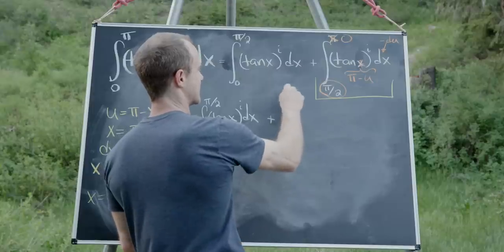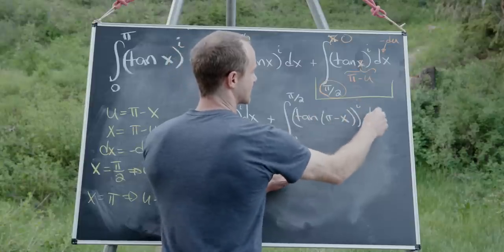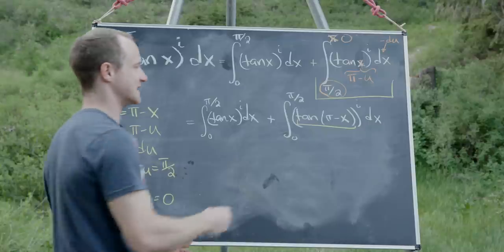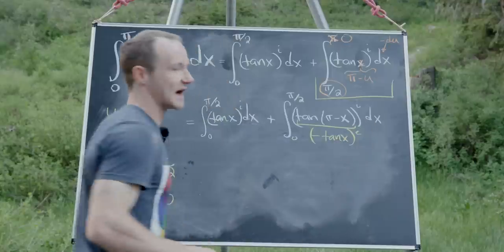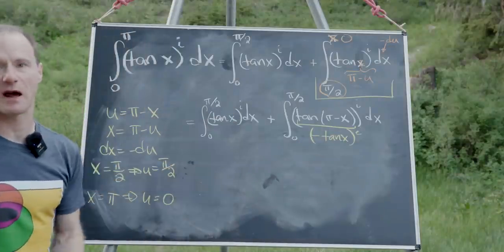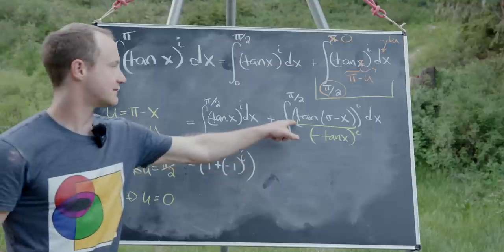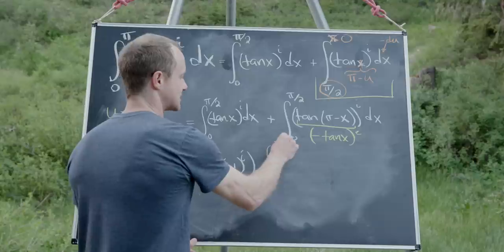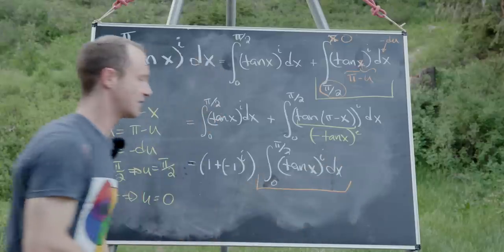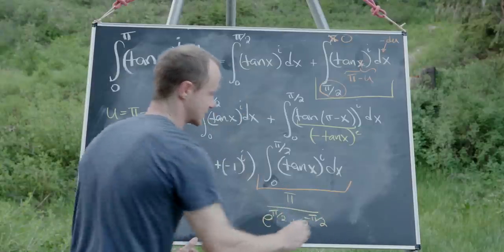This leaves us with the integral from 0 to π/2 of tangent(x)^i dx, plus the integral from 0 to π/2 of tangent(π minus x) all to the i-th power dx. Using the well-known trig identity that tan(π − x) equals minus tan(x), this becomes minus tan(x) all to the i-th power, which factors into tan(x)^i times (−1)^i. Combining with the first integral gives us (1 + (−1)^i) times the integral from 0 to π/2 of tangent(x)^i dx, which equals π over e^(π/2) plus e^(−π/2).